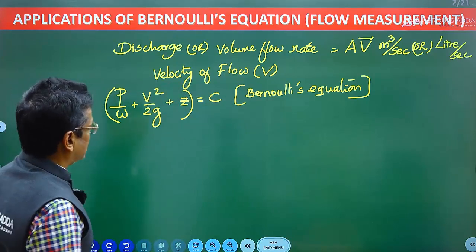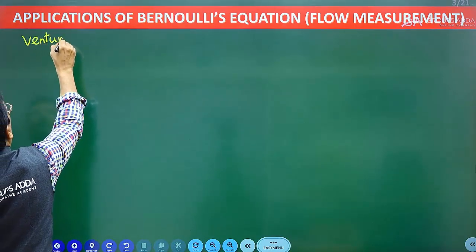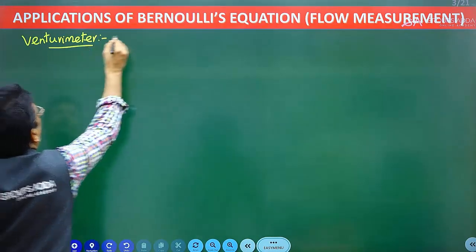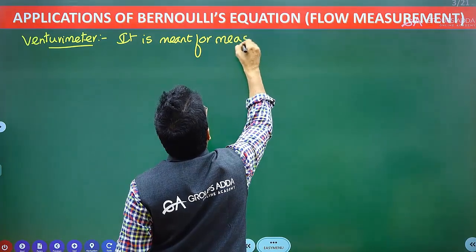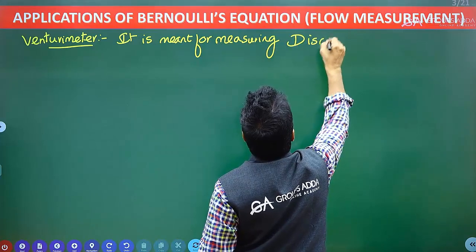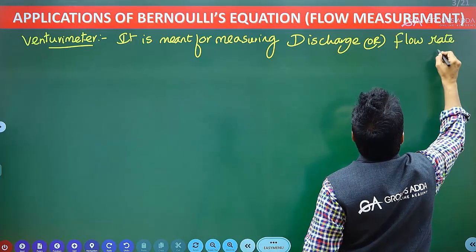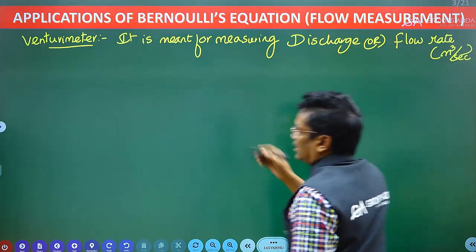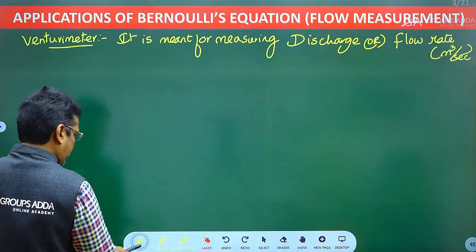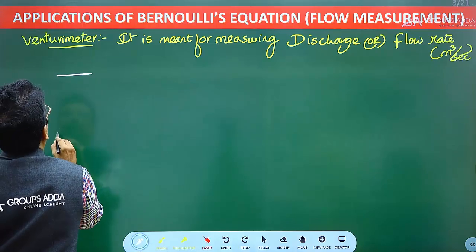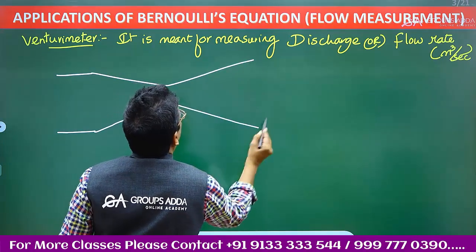First, I will use Bernoulli's equation for measuring the discharge by using the Venturi meter. The Venturi meter is meant for measuring discharge, or volume flow rate, expressed in meter cube per second. Now I am going to draw the constructional features — how the Venturi meter looks like.